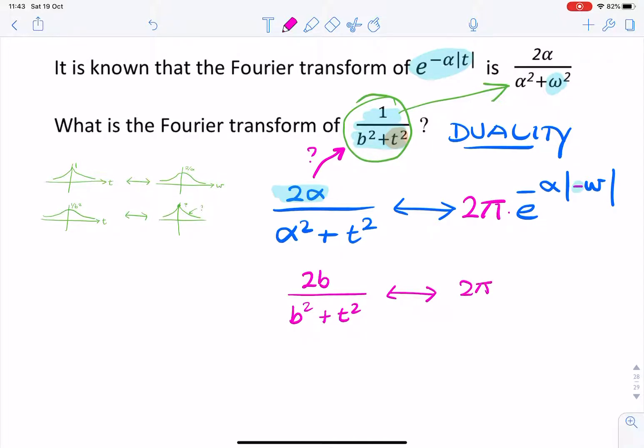That corresponds to 2π times e to the minus b. I'll get rid of the minus sign. So we still have the problem of 2b in the numerator. What we're looking for is a 1 in the numerator. So the easy way to get rid of that is simply to divide by 2b.